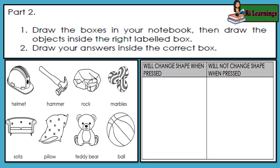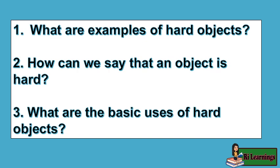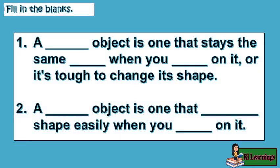Part 2: 1. Draw the boxes in your notebook, then draw the objects inside the right labeled box. 2. Draw your answers inside the correct box. Generalizations and abstractions: What are examples of hard objects? How can we say that an object is hard? What are the basic uses of hard objects? Fill in the blanks: A blank object is one that stays the same blank when you blank on it, or it's tough to change its shape. A blank object is one that changes blank shape easily when you blank on it.